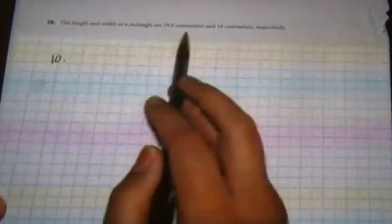Question 10 wants us to solve for the length and width of a rectangle, which are 19.5 cm and 14 cm respectively. It wants us to give the maximum and minimum possible areas of each, and they want it rounded to the nearest whole square unit.